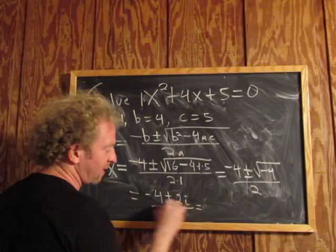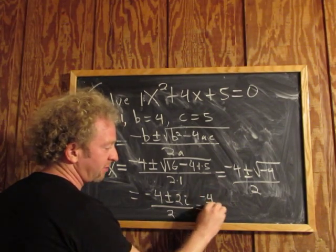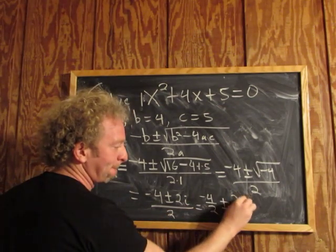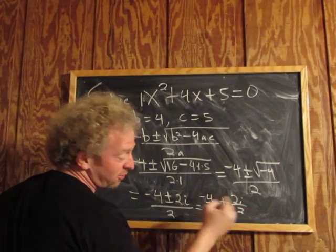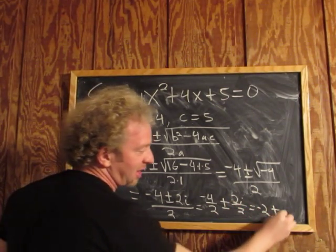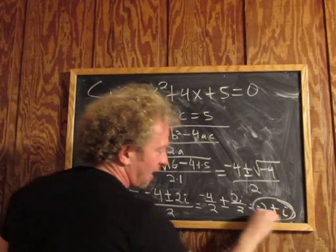And you can break it up, it's negative 4 over 2. Beautiful stuff. Plus or minus 2i over 2. Negative 4 over 2 is just negative 2, and then 2i over 2 is just i. And that's it.